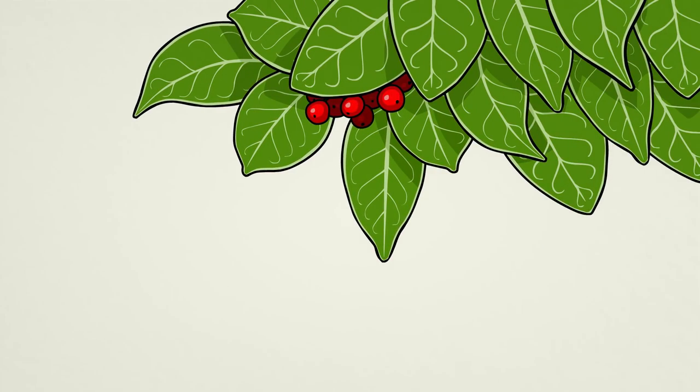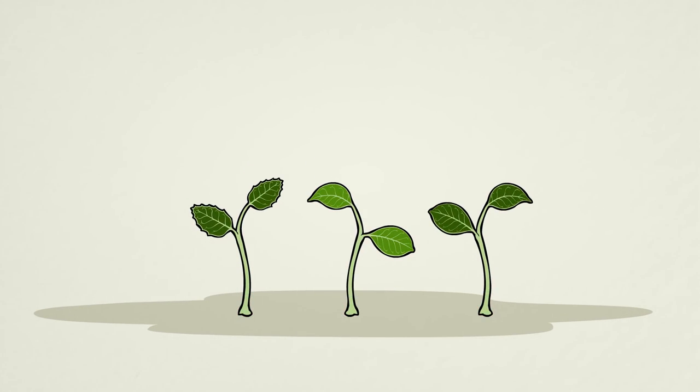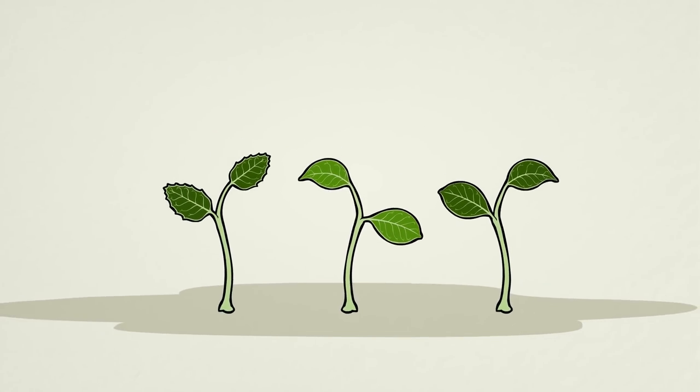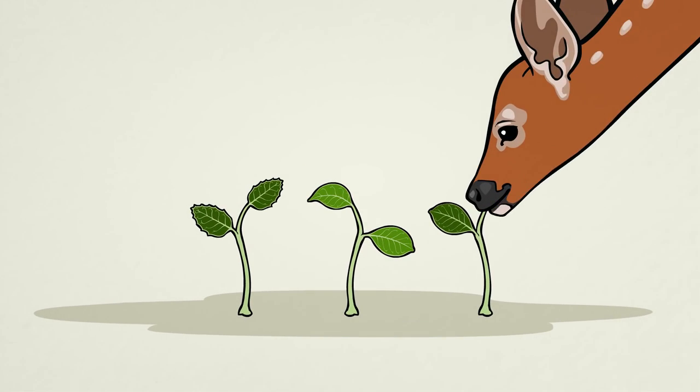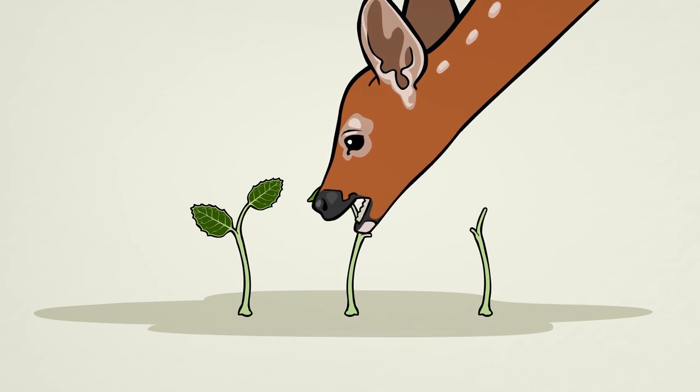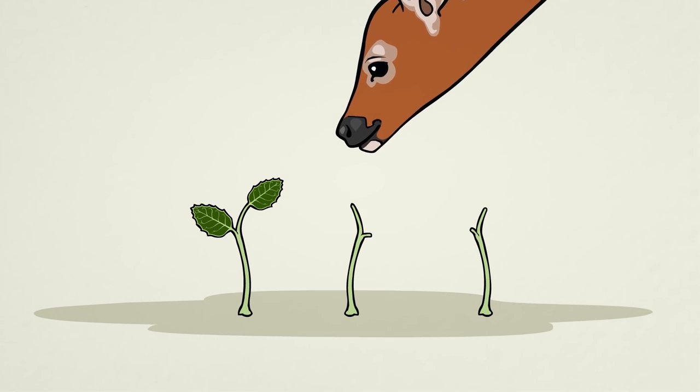Well, when a holly plant reproduces, its offspring often show random variation. They are slightly different from their parents and slightly different from each other. In a forest filled with grazing animals, individual plants which happen to be harder to eat than their siblings are more likely to grow up and have children of their own.